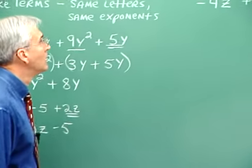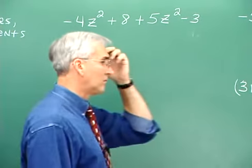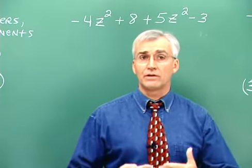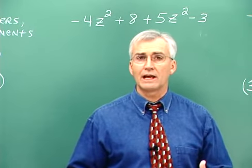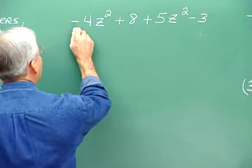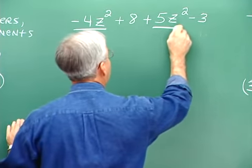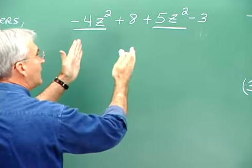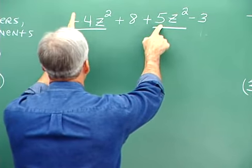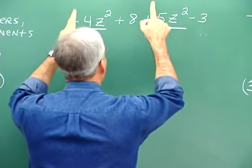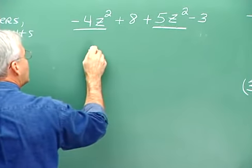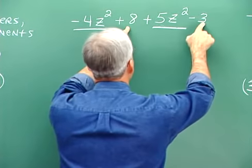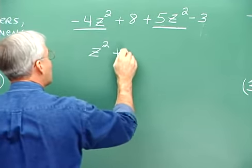Let's look at another one. We have one here. Look for the like terms and bring them together by bringing together the numerical coefficients, whether positive or negative. We have negative 4z squared — this is a term like the other z squared term because they have the same variable part. Bringing them together: negative 4 with 5 is 1, so we have 1z squared, or just z squared. Then bringing together the constants: 8 minus 3 is 5, so plus 5.